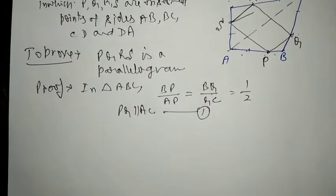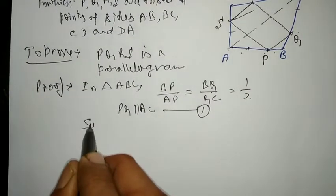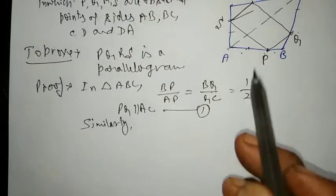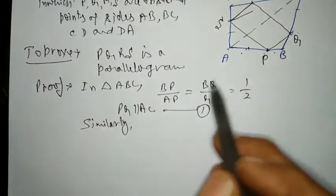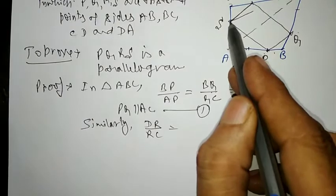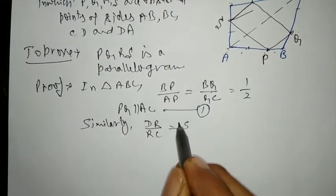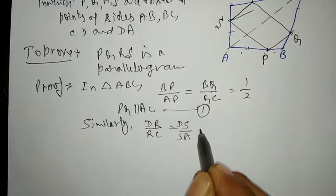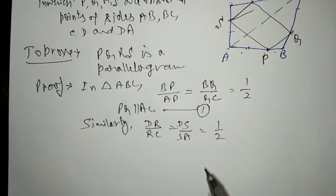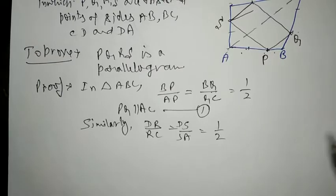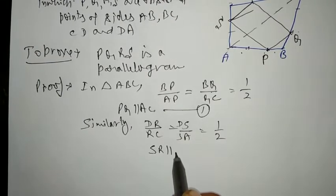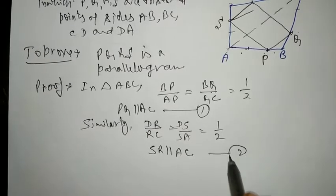Similarly, DR upon RC is equal to DS upon SA, ratio is 1:2. By the converse of Thales' theorem, SR is parallel to AC. This is equation 2.